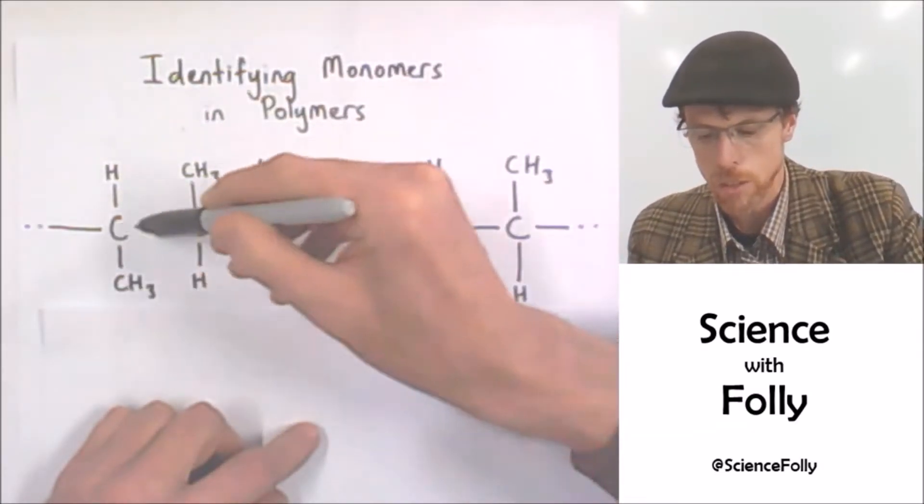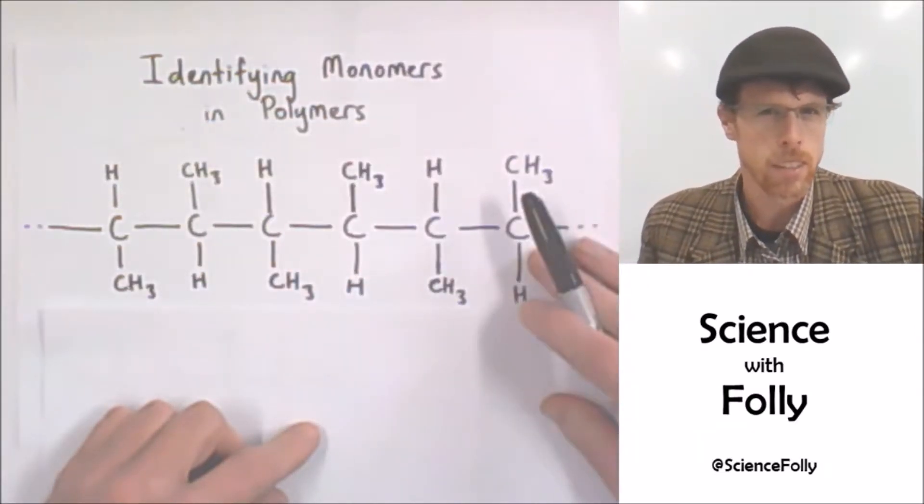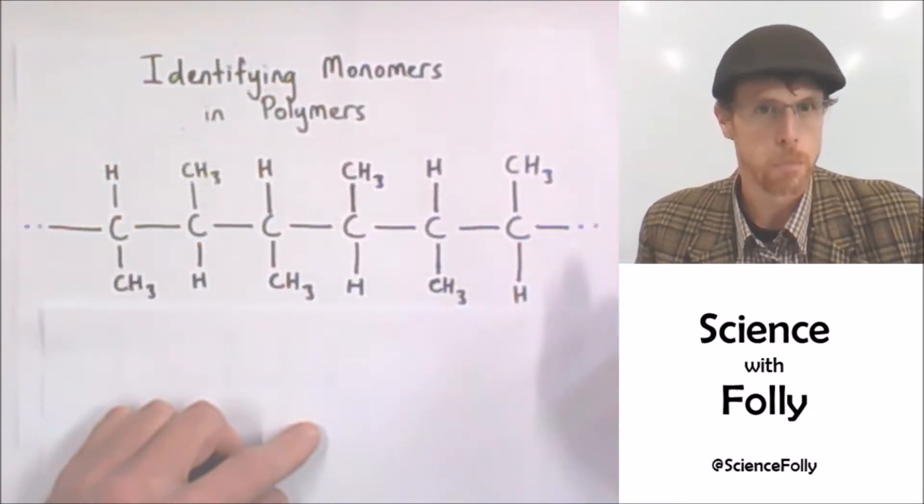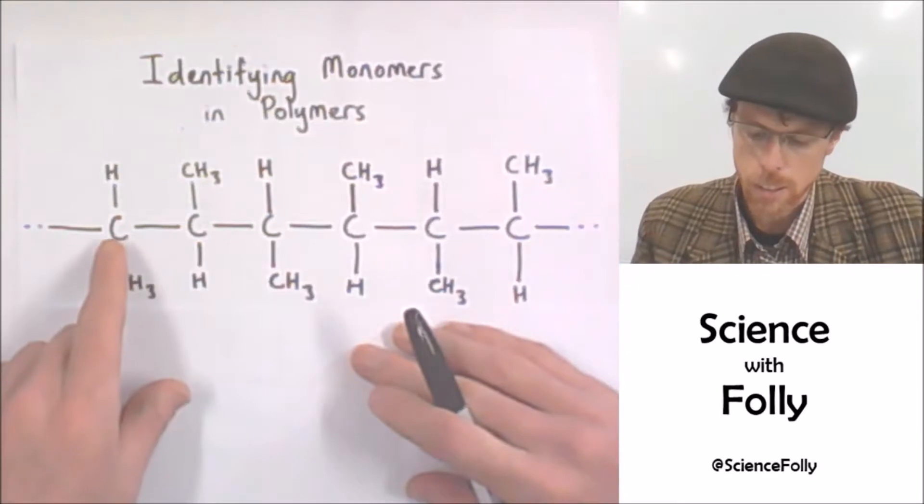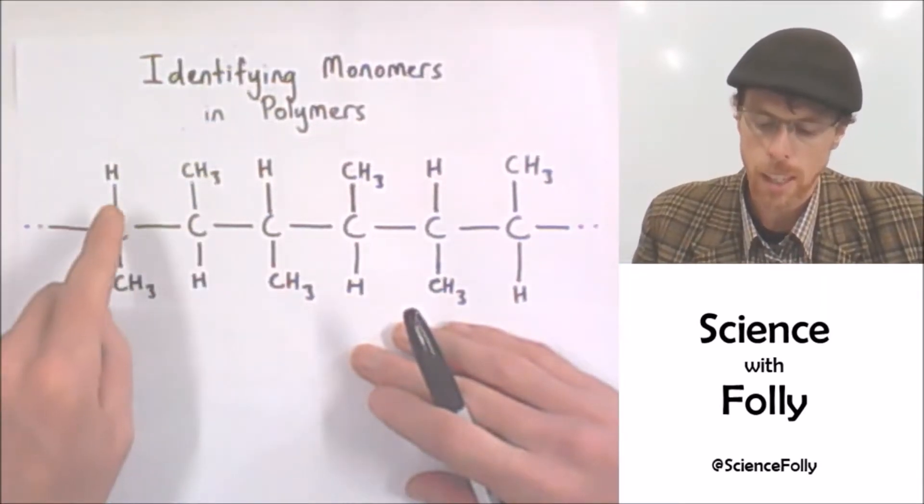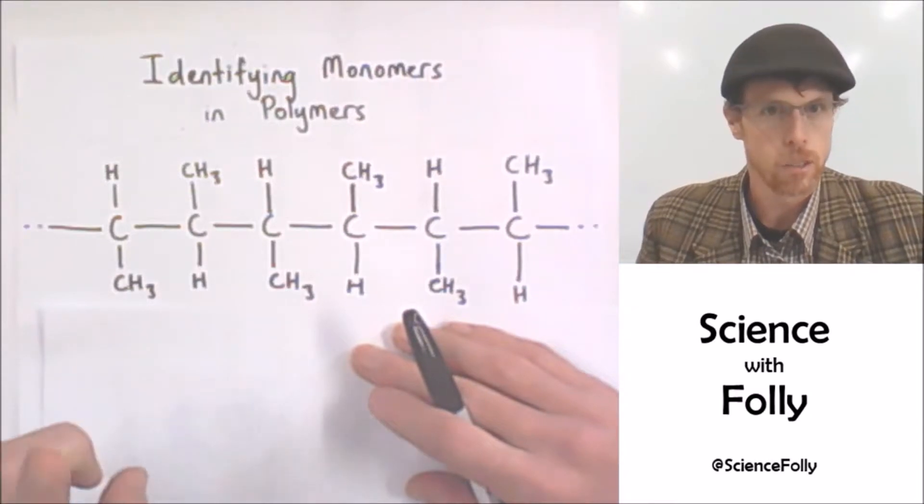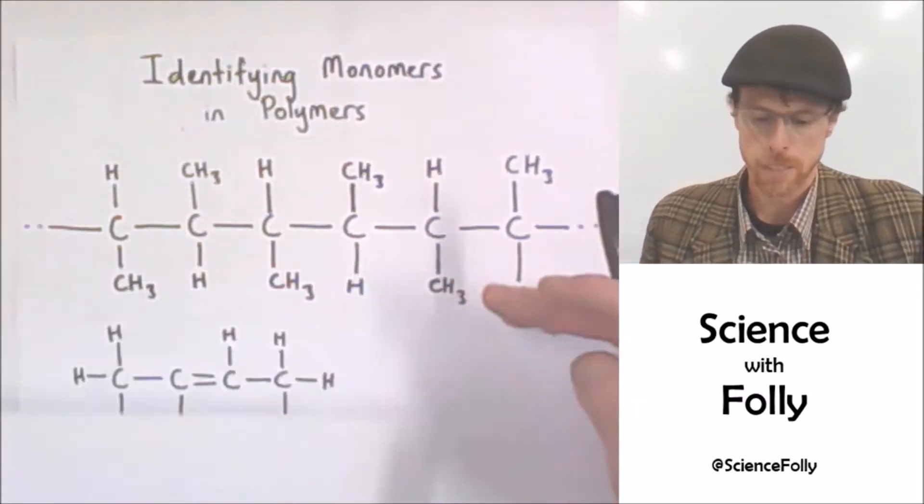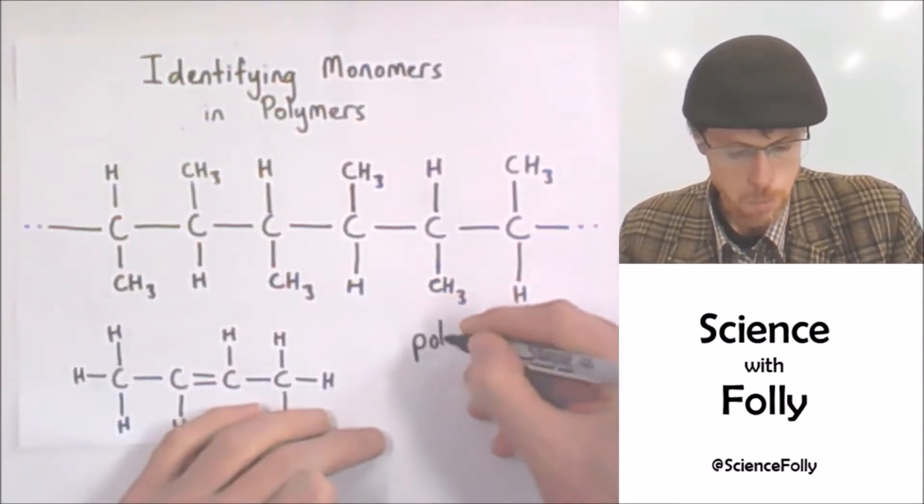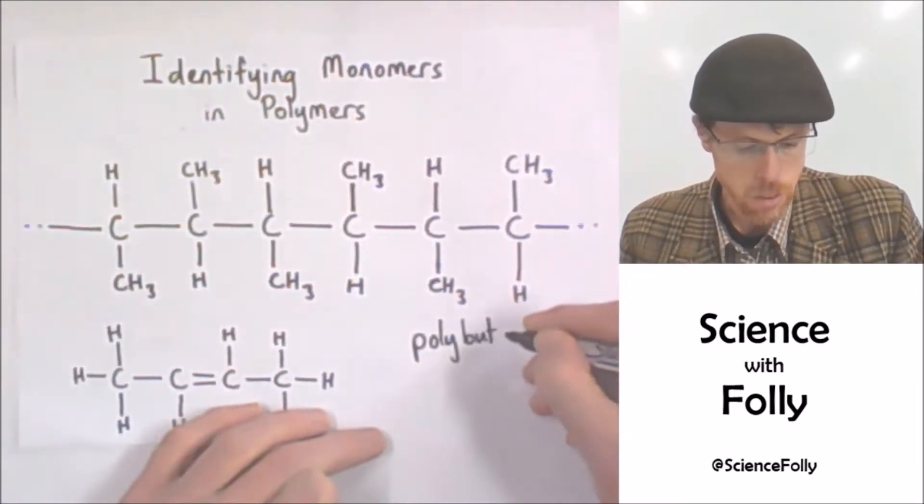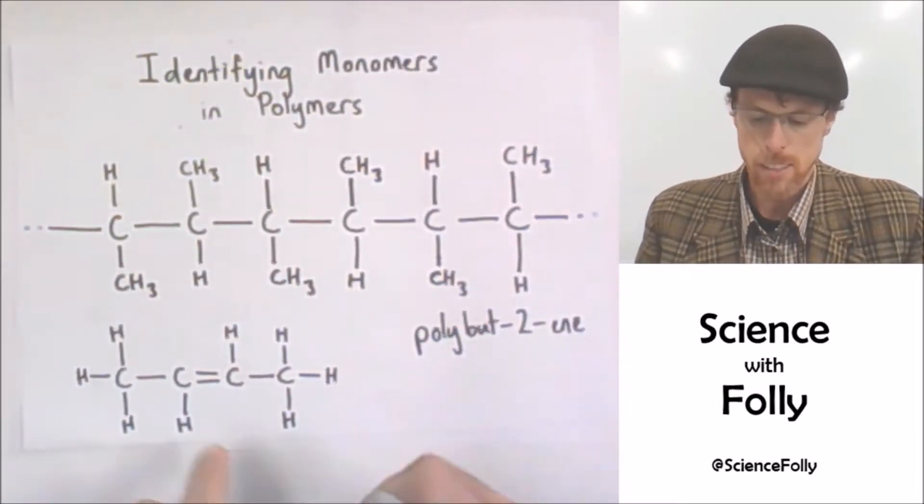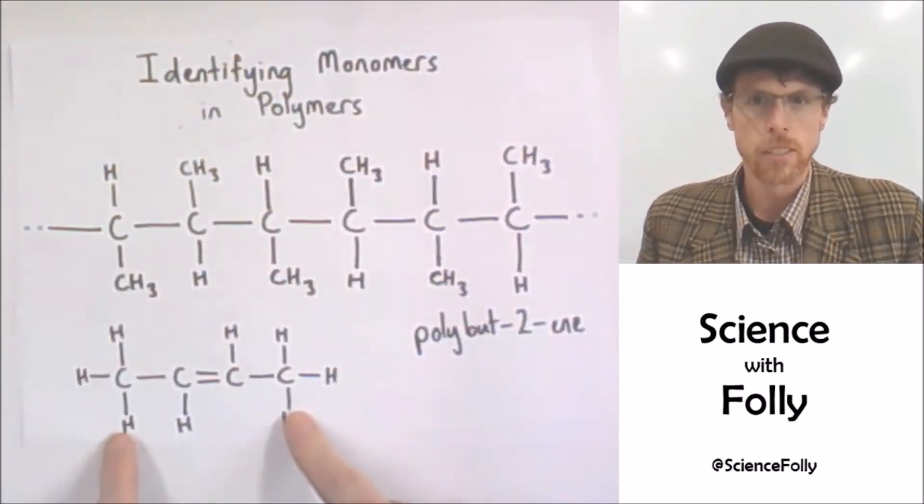So each unit has one, two, three, four carbons in it. Four carbons, what's that going to be? Butene. And if we look at this, we could see that the double bond would have been between carbon two and three. So it's but-2-ene, and we're going to call this polybut-2-ene. And you can see where I've drawn the individual monomer here.